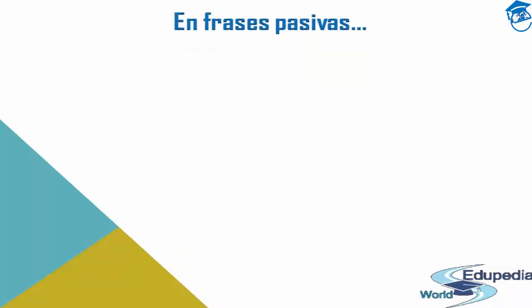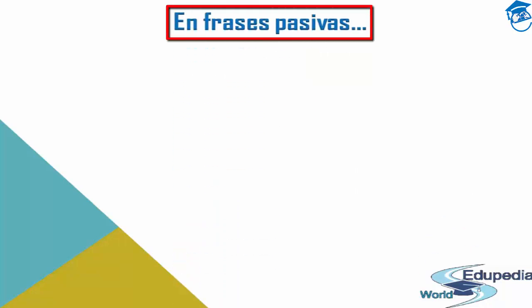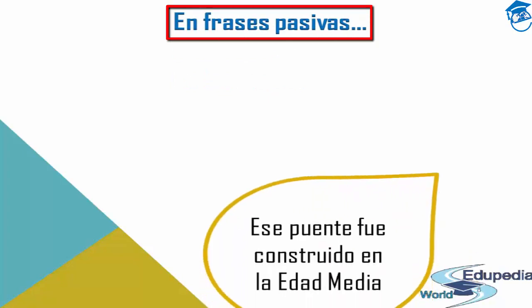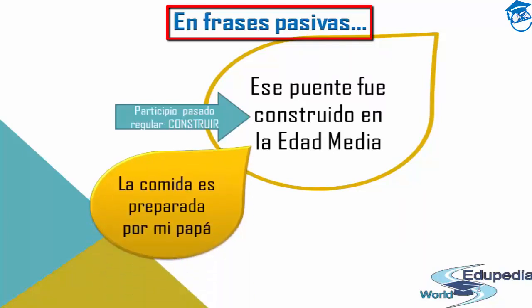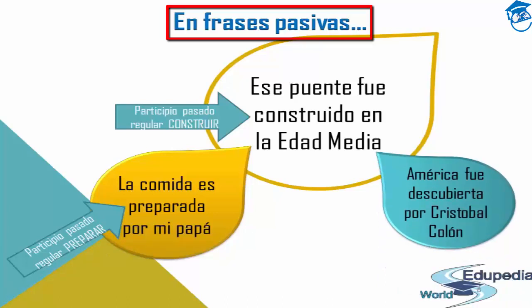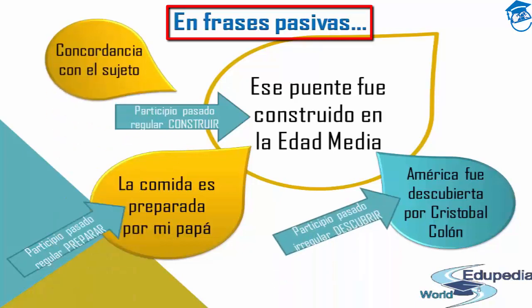How can you use past participles in Spanish? The first way, as we saw in the previous video, is for passive phrases — frases en voz pasiva. For example: 'ese puente fue construido en la Edad Media' — that bridge was built in the Middle Ages. 'La comida es preparada por mi papá' — the food is prepared by my dad, using the regular past participle of 'preparar.'